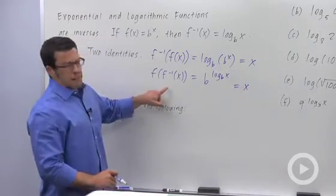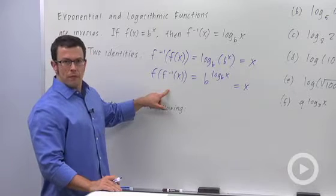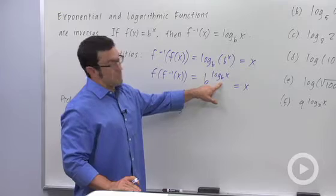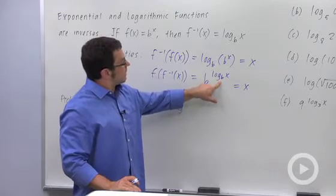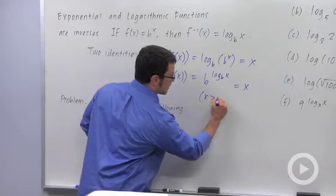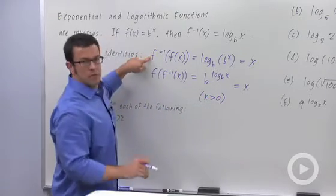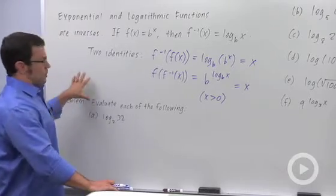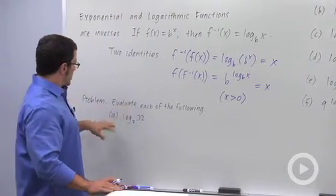And second, f of f inverse of x, which is b to the log base b of x, also equals x. Now, this second identity is only true for positive values of x because only positive values of x are in the domain of the log base b. So this second one is only true for x greater than zero. But this identity is true for all x. Let's use these identities in some exercises.